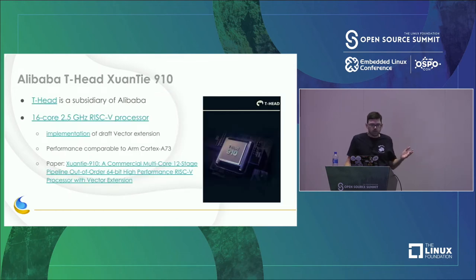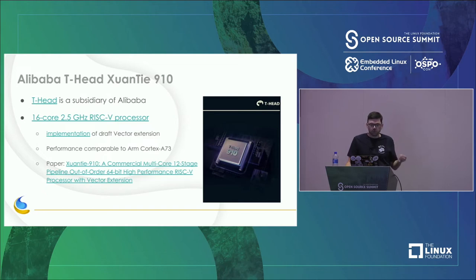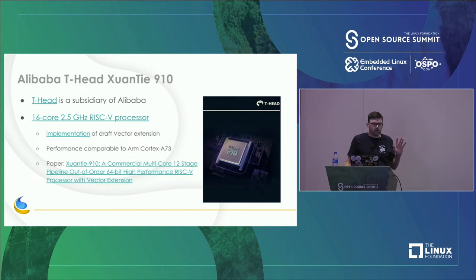A high-end design comes from Alibaba's chip design division called T-Head. They have a design called the XuanTie C910 — 16-core, 2.5 GHz RISC-V processor. It's really high-end: a 12-stage out-of-order core targeted towards high-performance, comparable to an A73. They wrote an interesting paper about it, and they're actually using it in some of Alibaba's production in FPGAs.